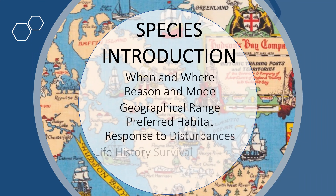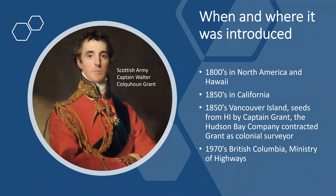Species introduction — when and where. It's thought that the scotch broom plant was first introduced in the 1800s in North America and Hawaii. In the 1850s, a Scottish captain named Captain Walter Grant was a contractor for the Hudson Bay Company as a surveyor. He went to Hawaii and really liked the scotch broom plant, thought it was very pretty, and brought it back to Vancouver Island and propagated it. At the same time, it was being propagated in California. And then in the 1970s, the British Columbia Ministry of Highways started planting it.